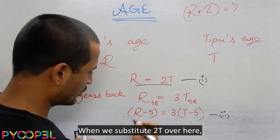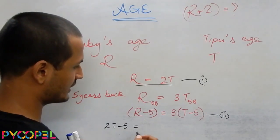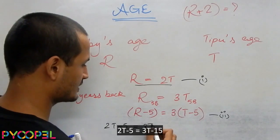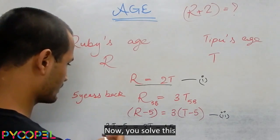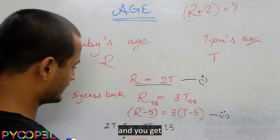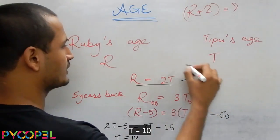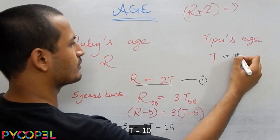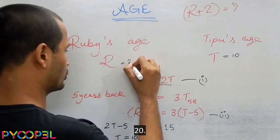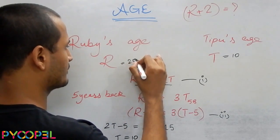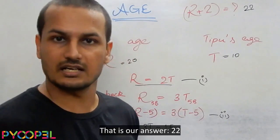So when we substitute 2T over here, we get 2T minus 5 is equal to 3 times T minus 5, which is 3T minus 15. Now you solve this. You get 2T, 3T here, T remains, 10 remains. So we get T equals 10. And from here, since we know R is equal to 2T, so R becomes 20. R is 20, R plus 2 becomes 22. That is our answer.